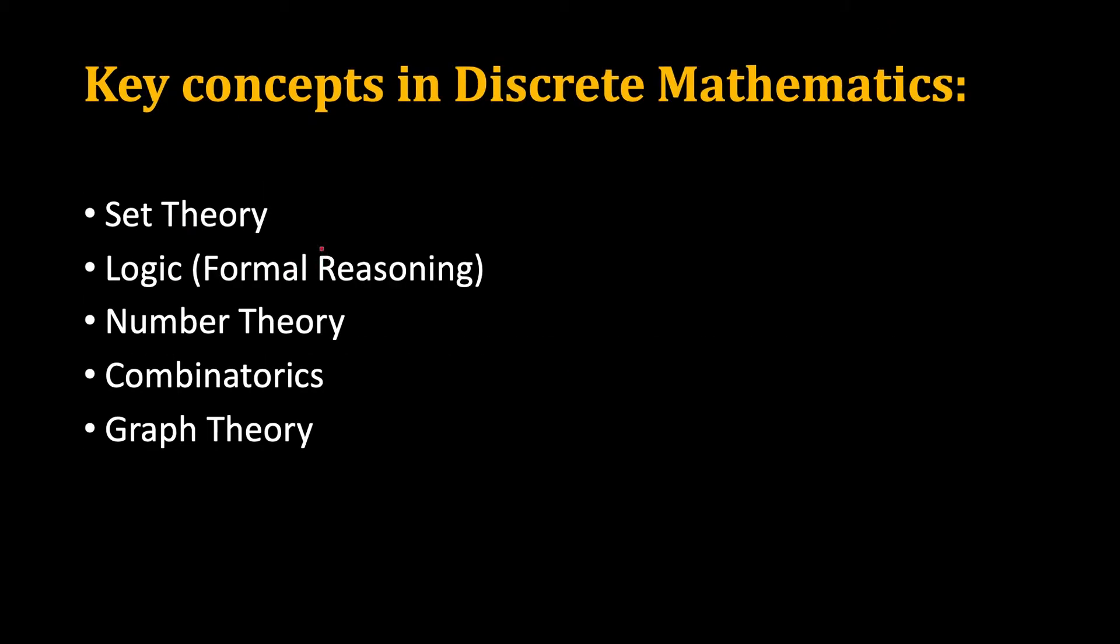Now let's see what are the key concepts or the key broad areas that we study under discrete mathematics. The first is set theory, then we have logic or formal reasoning, then we have number theory, combinatorics and graph theory.